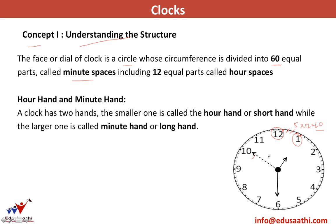Every minute, the minute hand — the longer hand — moves from one space to the next. There are also 12 equal parts called the hour spaces, like 12, 1, 2, 3, 4, 5. We are not really concerned with the seconds hand in clock questions. We will just have a short hand which is the hour hand and a longer hand which is the minute hand.